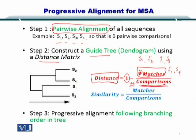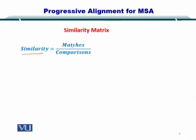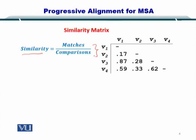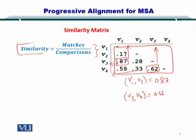Now that you have computed the distances, you move to the third step — creating a branching order to represent the distances. Similarity is equal to matches over comparisons. Looking at the similarity matrix, you can see that amongst all values, the highest value is 0.87, which is between V1 and V3. So V1 and V3 are very similar with a similarity score of 0.87. Next, you have 0.62, which is the similarity between V3 and V4.